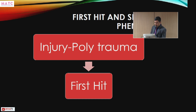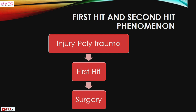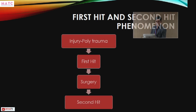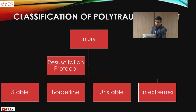If we go and operate without understanding the physiological parameters, that operation becomes a second hit. To prevent the second hit, depending on the parameters, we can segregate patients into either Damage Control Orthopedics or Early Total Care. Basically, we have to classify polytrauma patients into different groups.